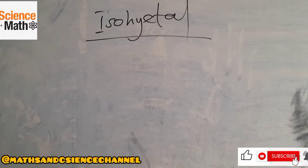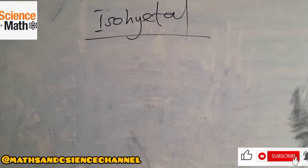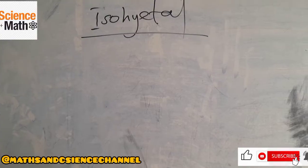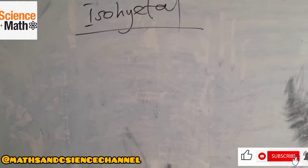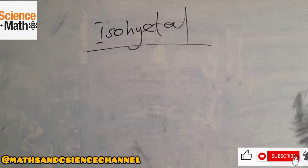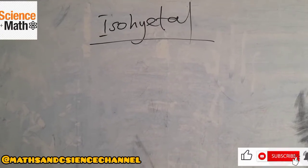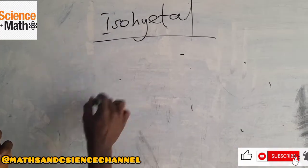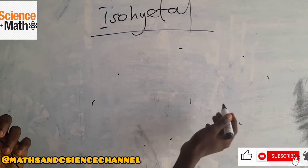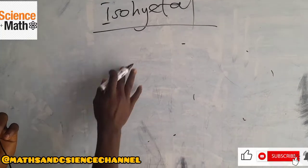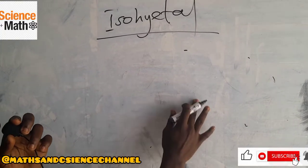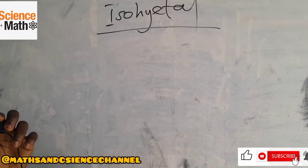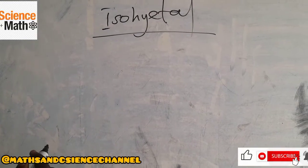Welcome once again to my channel. In this section, we are going to talk about the Isohyet method in measuring precipitation over a particular area. We use it when rain gauges are non-uniformly distributed over some areas. For the Isohyet method, we are connecting points of equal mean precipitation.